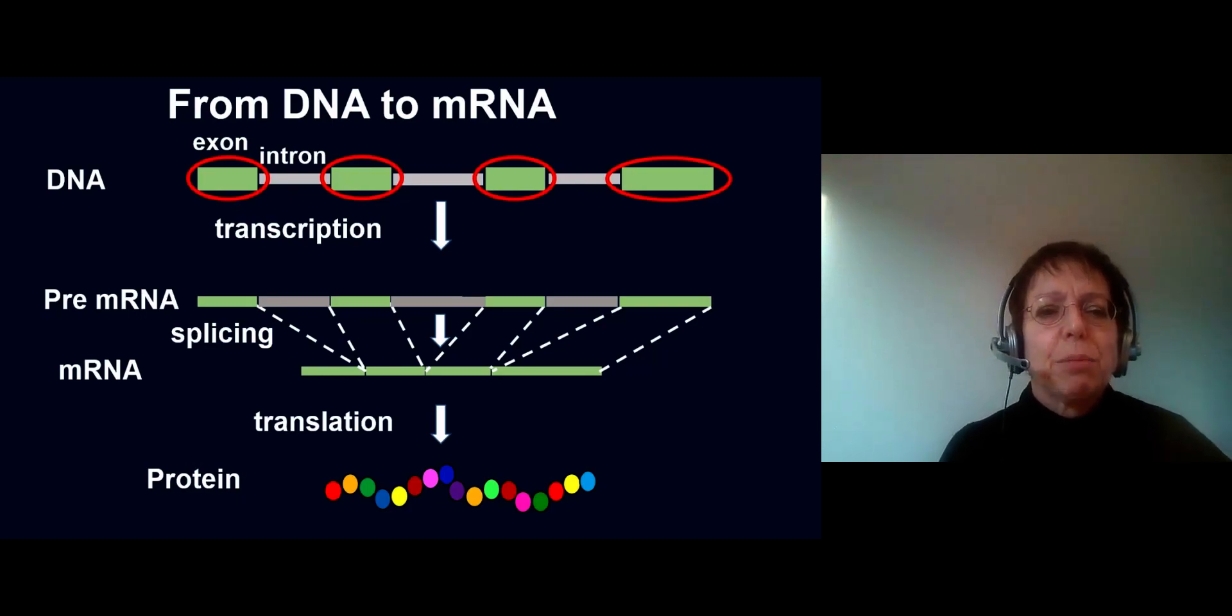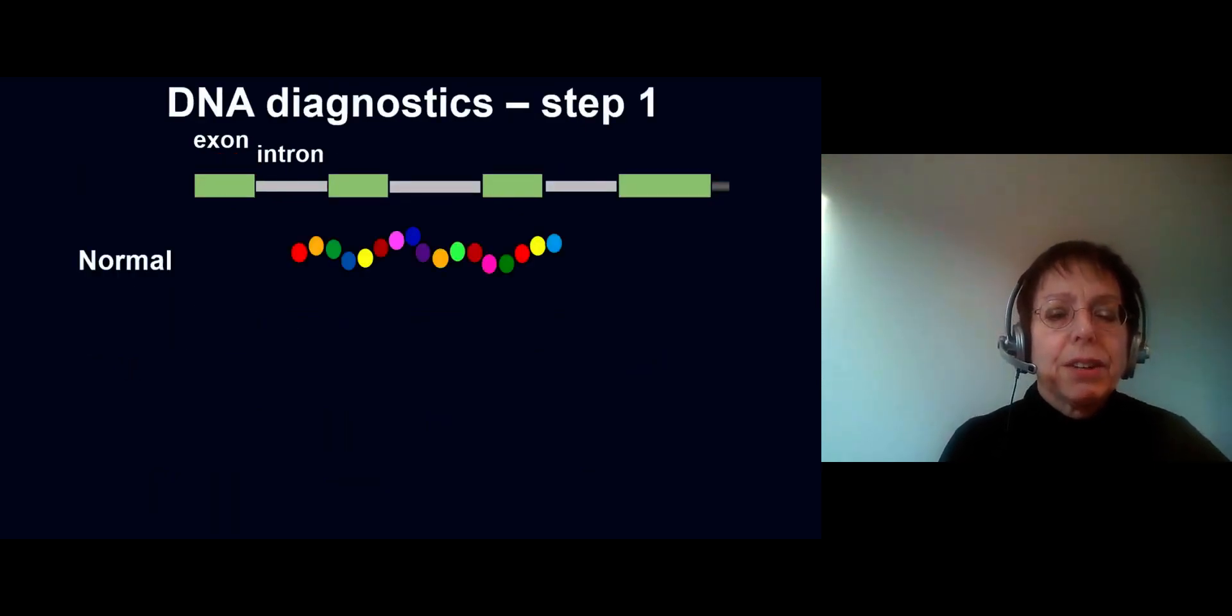In current DNA diagnostics, we mostly sequence the exons with the code of the protein and the short part of the introns that contain the most important signals for splicing. If we have a normal DNA sequence in the exons, then normal protein is encoded. But if there is a change in an exon, like depicted here with the red star, an early stop in protein synthesis can occur.